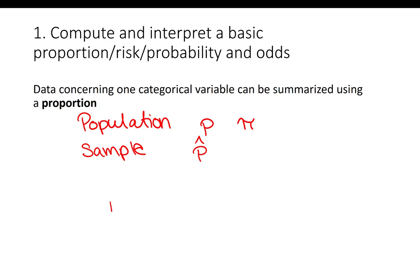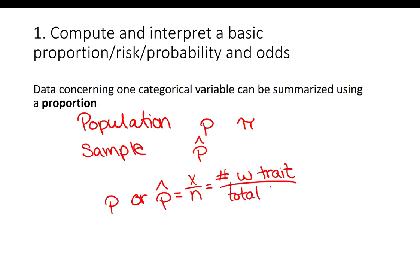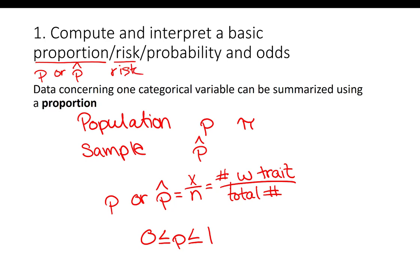The formula is the same for both a population and a sample. A proportion is equal to x over n, where x is the number in the group with the trait and n is the total number. Proportion, risk, and probability are all synonyms — they're all equal to x over n, and they must be between 0 and 1. For risk, we usually write out the word risk. For a probability, we write p of the event — for example, the probability that a baby is a boy would be written as p(boy).